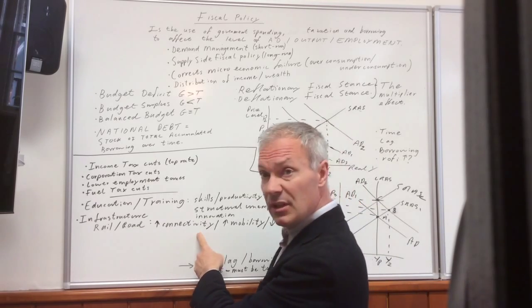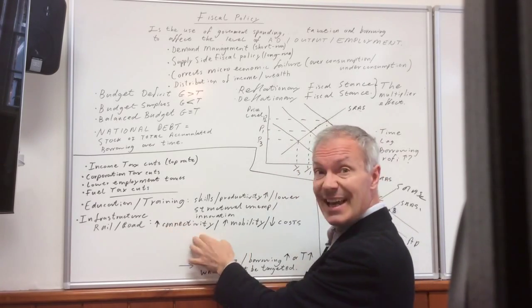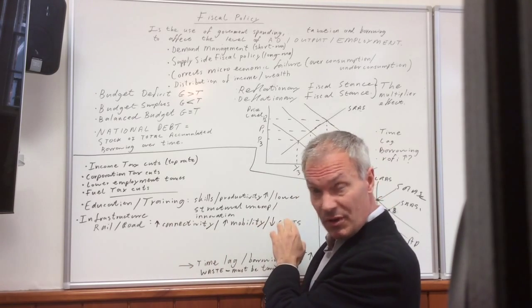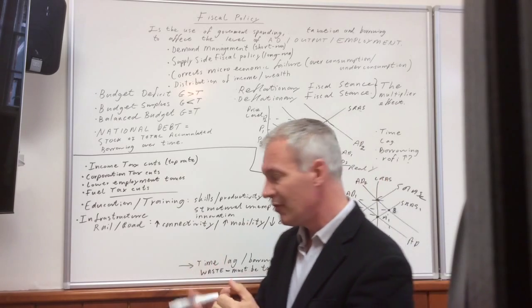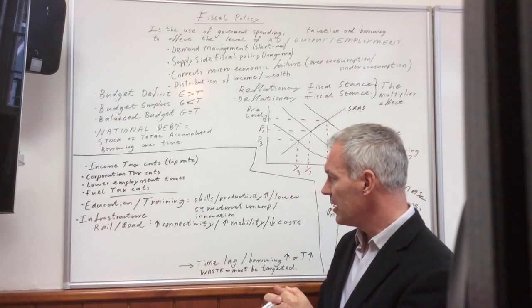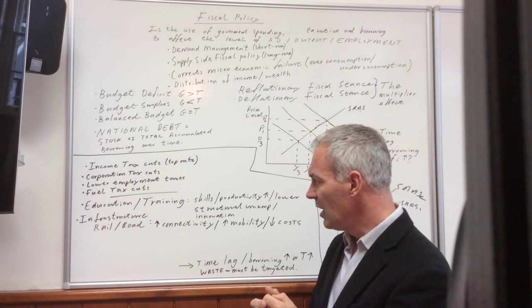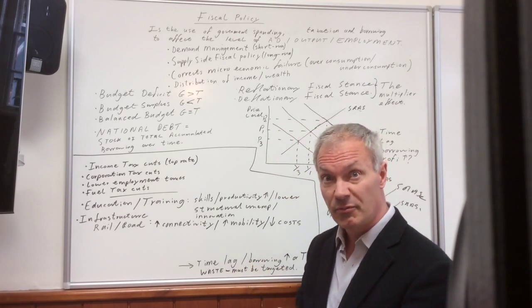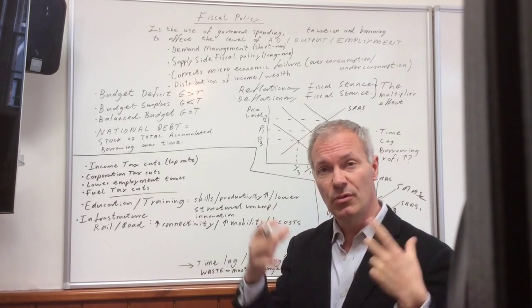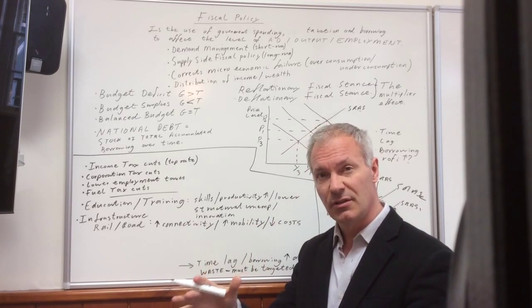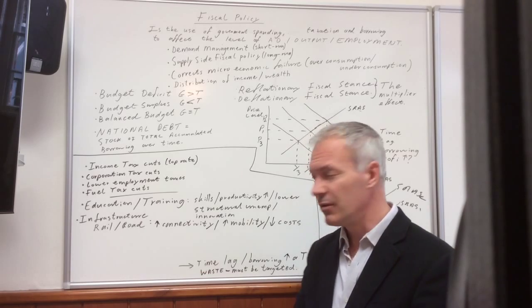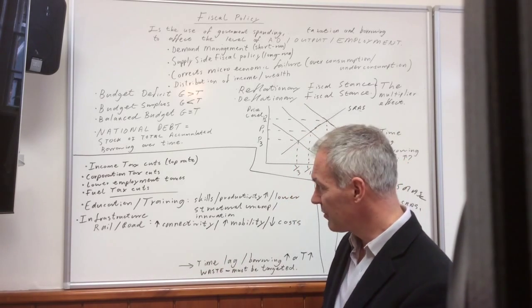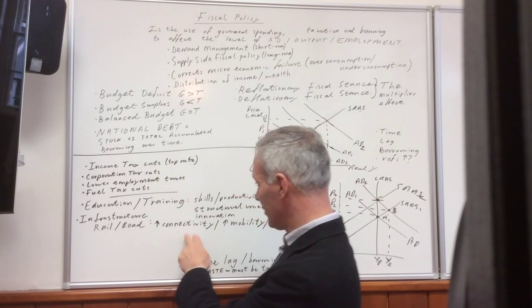Then this increases connectivity, it increases mobility, and it should reduce government and business costs. And therefore, it should increase productivity in the economy. For example, businesses in the UK lose billions of pounds as a result of congestion, where people and goods sit still on roads, and therefore this increases business costs quite considerably. So, infrastructure can make a big difference.